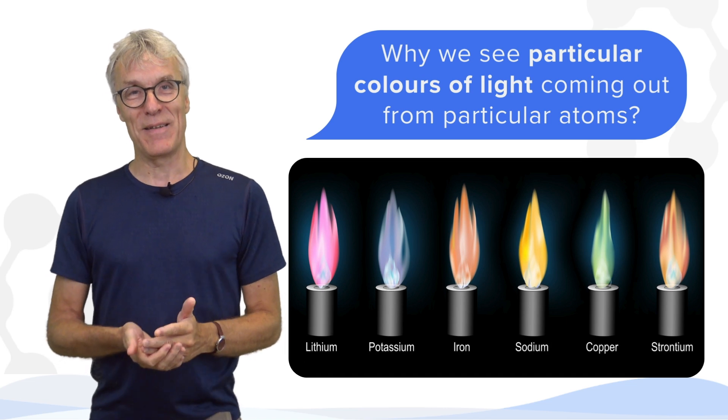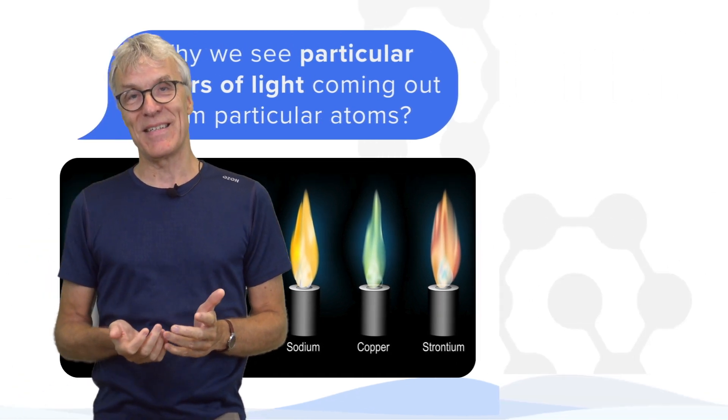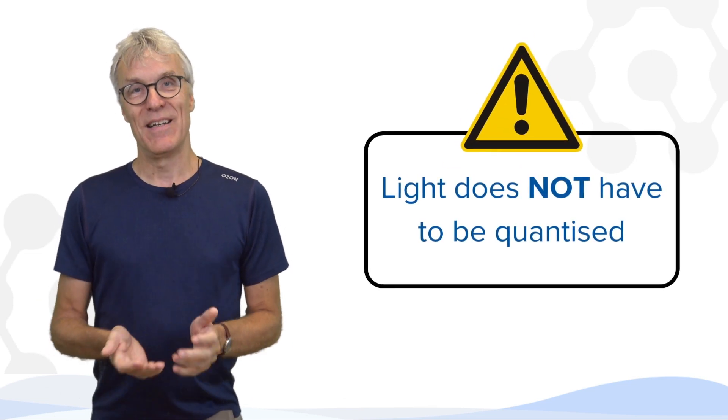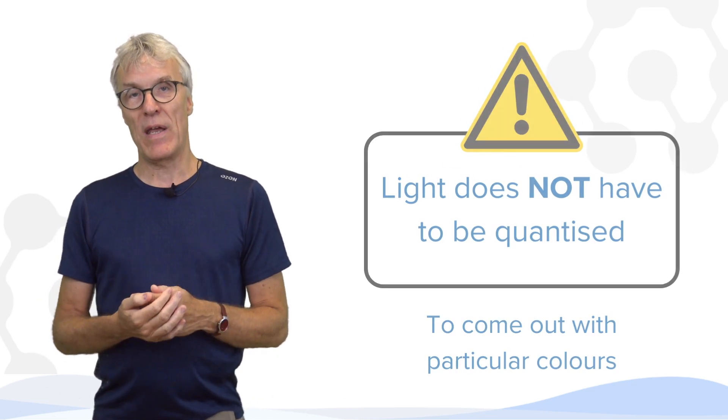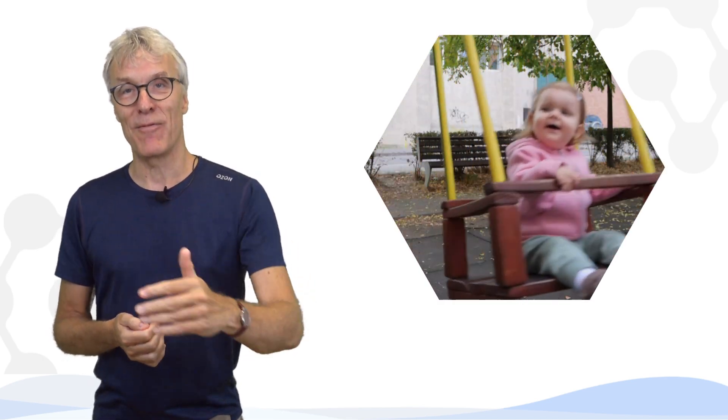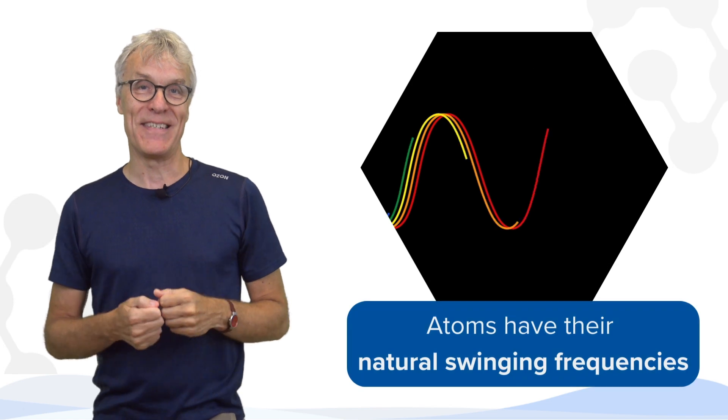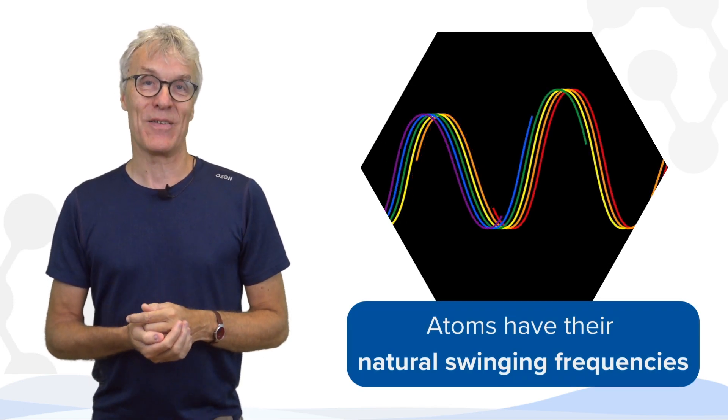Later, it actually turned out in the quantum theory of the 1920s that light does not have to be quantized to come out with particular colors. The same way as a child on a swing will swing back and forth with a particular frequency, the atoms have their natural swinging frequencies. And that's actually what gives these colors to the light.